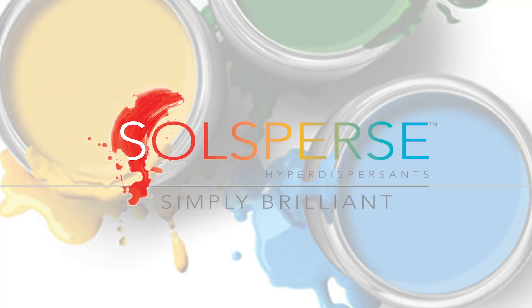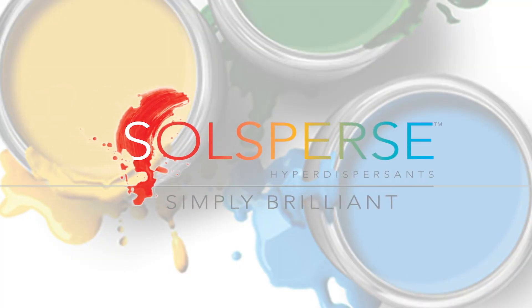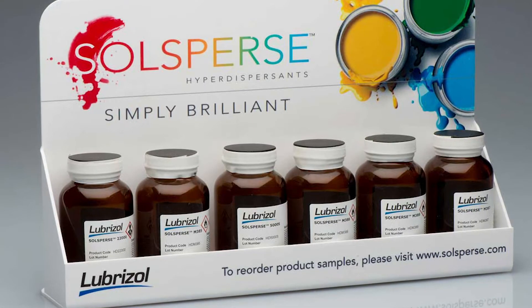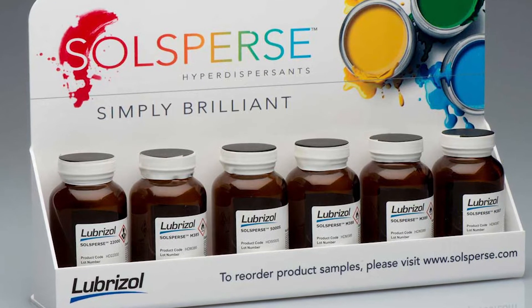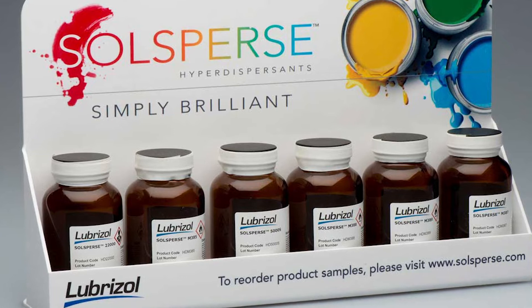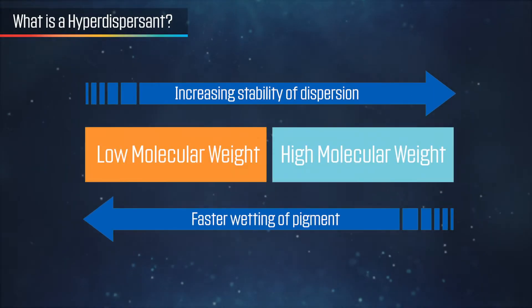Lubrizol's Solsperse polymeric dispersants, also known as hyperdispersants, are polymeric materials designed to offer significantly higher levels of performance. They are typically higher molecular weight, and this means they may contain multiple anchoring groups and stabilization chains. They can be tailored to work across a broader range of pigments or fillers and in different media.